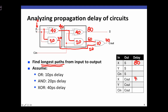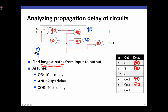The circuit is symmetric with respect to x and y, so we see a similar 80 and 70 picosecond latency from y to S and from y to carry out. For carry in, when it changes at time 0, that changes the output of the AND gate at time 20 and the output of the XOR gate at time 40. So the latency from carry in to S is 40 picoseconds, and the delay from carry in to carry out is 30 picoseconds.